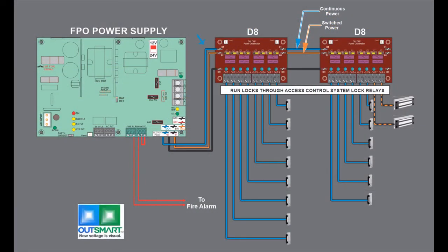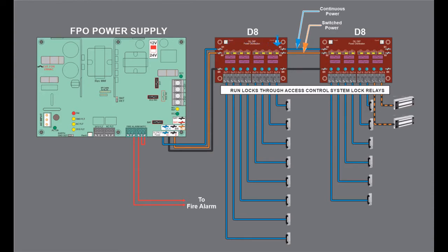Connect bus 1 of the D8s to DC1 of the FPO, which is the blue wire. Connect bus 2 of the D8s to DC2, which is the orange wire. On the D8, program the strike outputs to bus 1 and the mag locks to bus 2.